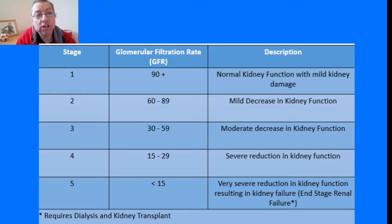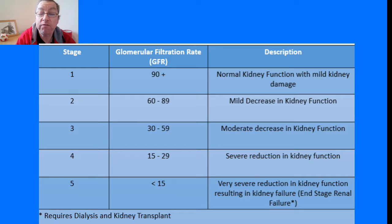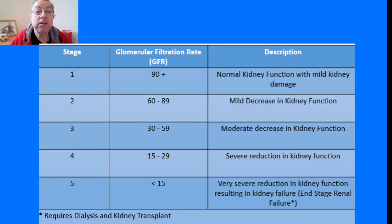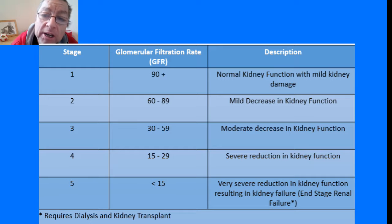The GFR for Stage 2 ranges from 60 to 89%. Stage 3 is moderate kidney impairment where the GFR ranges from 30 to 59%. Stage 4 is severe kidney impairment where the GFR ranges from 15 to 29%. I am now in Stage 4 at the moment since my kidney transplant.